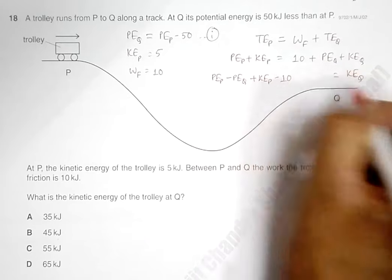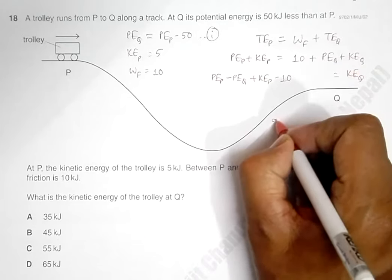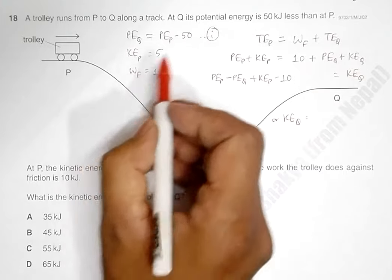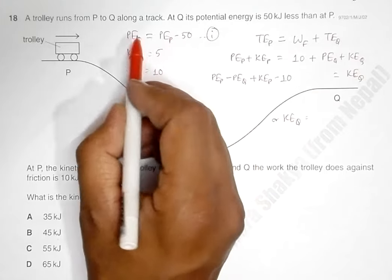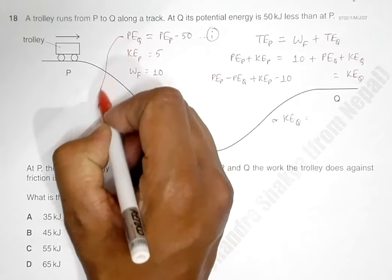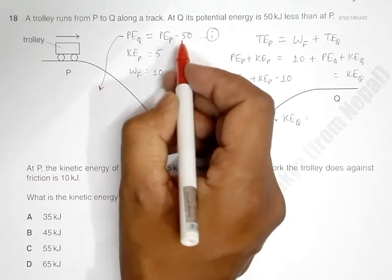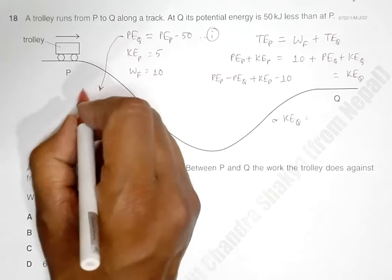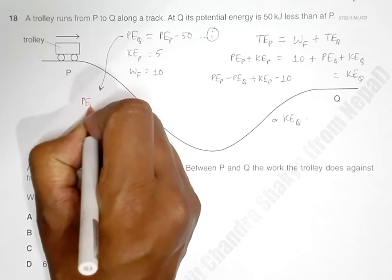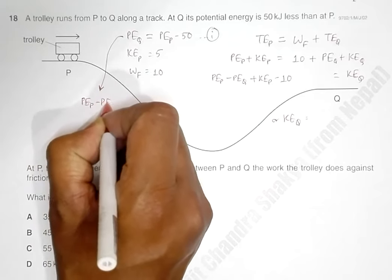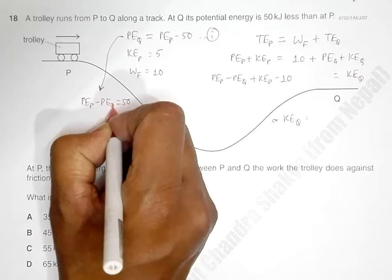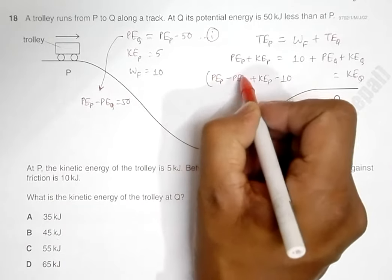Which gives us KE at Q. We can use the fact that PE at P minus PE at Q equals 50 kilojoules from our first equation.